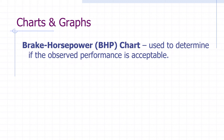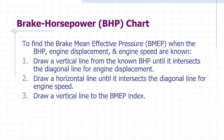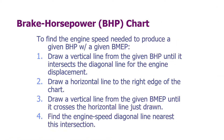The brake horsepower is the power delivered to the propeller shaft of an aircraft engine. The brake mean effective pressure is the average pressure measured in pounds per square inch inside the cylinder of a reciprocating engine during the power stroke. It can be found by utilizing the brake horsepower chart. The brake horsepower chart can also be used to determine the engine speed needed to produce a given brake horsepower with a given brake mean effective pressure.